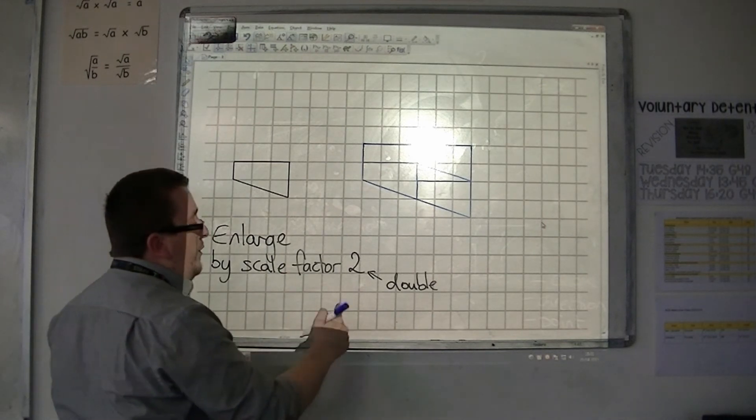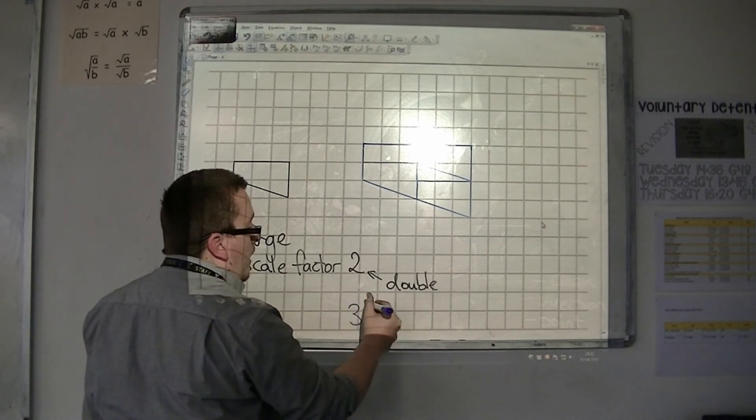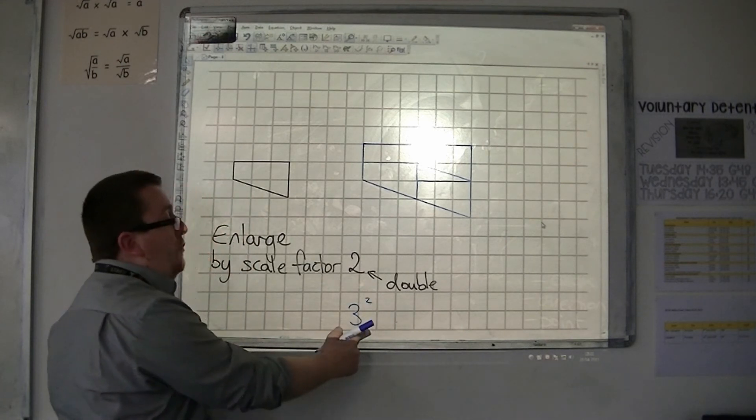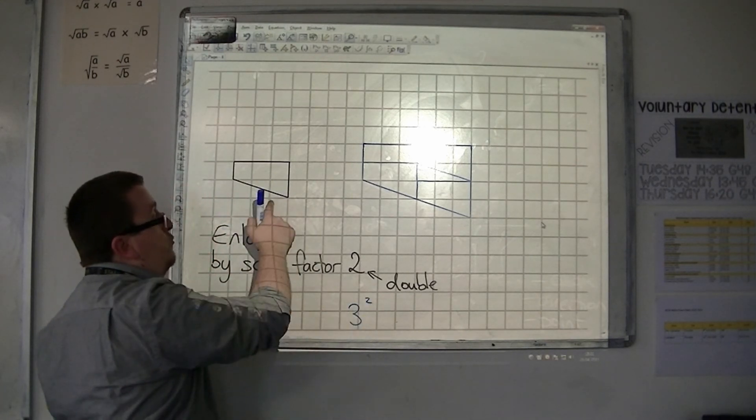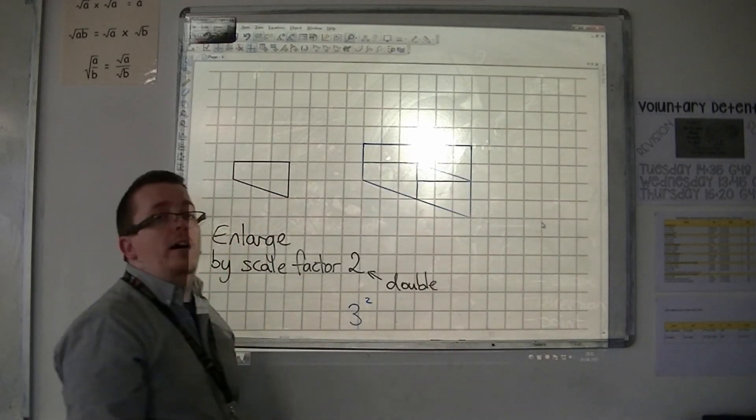So, if I was working with scale factor 3, I would square it, and I would expect to fit 9 of these original shapes into my larger version.